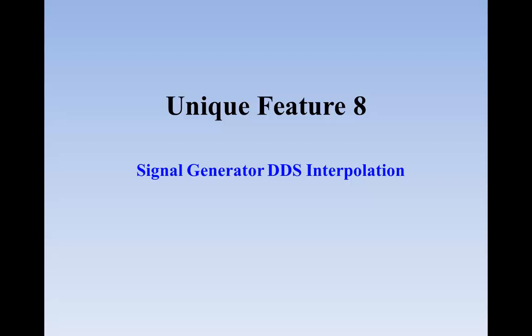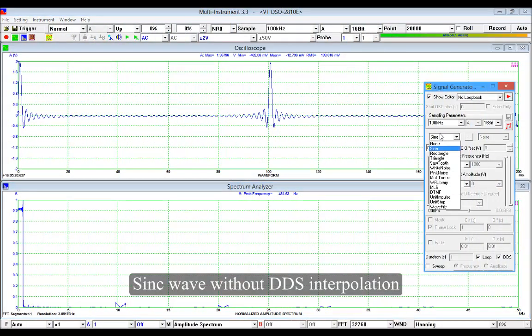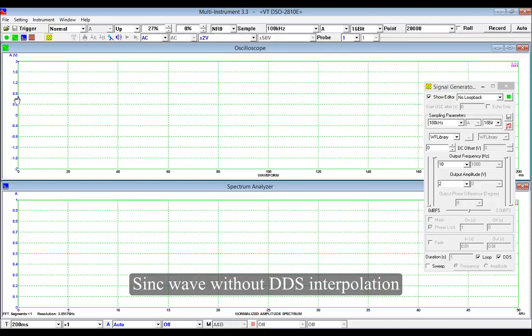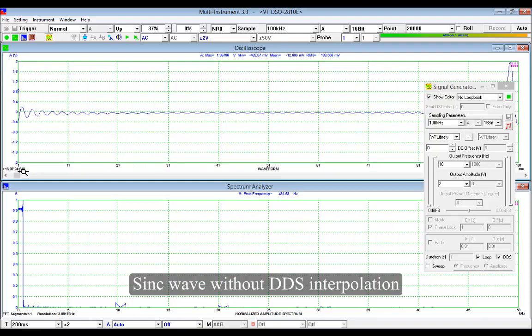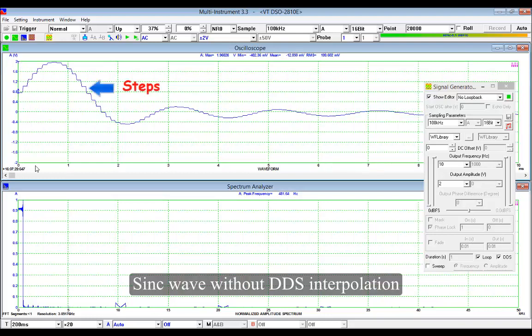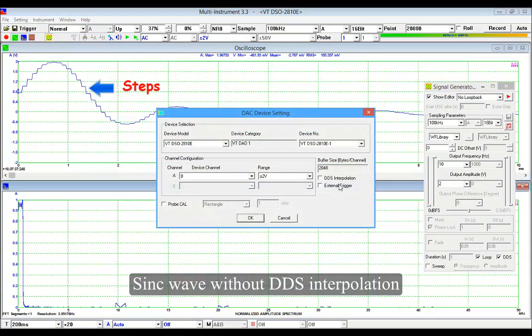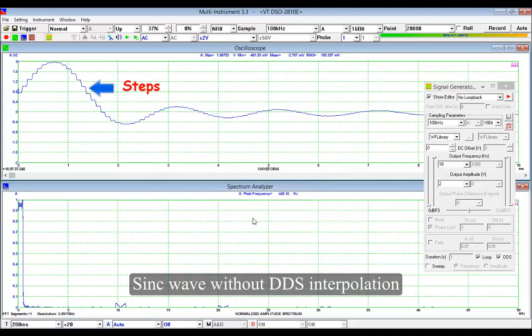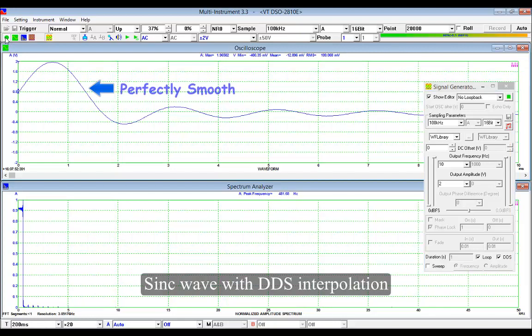Here we generate a sine wave at 10 Hz using VT DSO 2810E. The generated signal is looped back to its oscilloscope's input. Then we start the oscilloscope, adjust the trigger level to make the display stable. Zoom in to see the detailed waveform. The steps along the waveform can be clearly seen. This problem is caused by the limited DDS buffer size. Stop the oscilloscope and signal generator, then go to setting, DAC devices, and select DDS interpolation. Start the signal generator and oscilloscope again. As you can see now, all steps are now smoothed out and the waveform looks perfect.